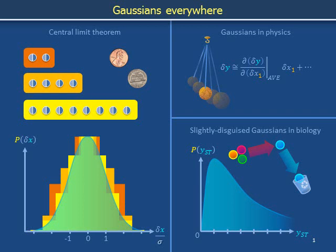In the last video we described the central limit theorem. In this video we will describe how the central limit theorem suggests that Gaussian distributions could be prevalent in physics labs, and how the central limit theorem suggests that slightly disguised Gaussian distributions could also be prevalent in biology.